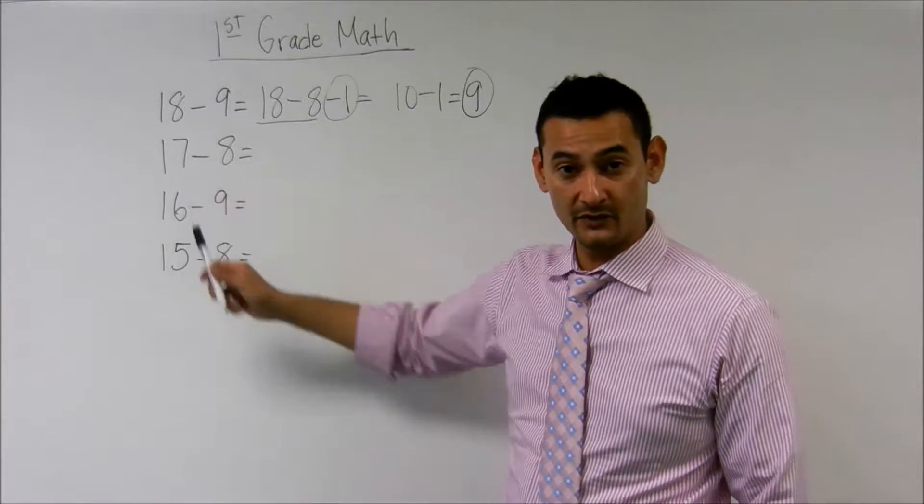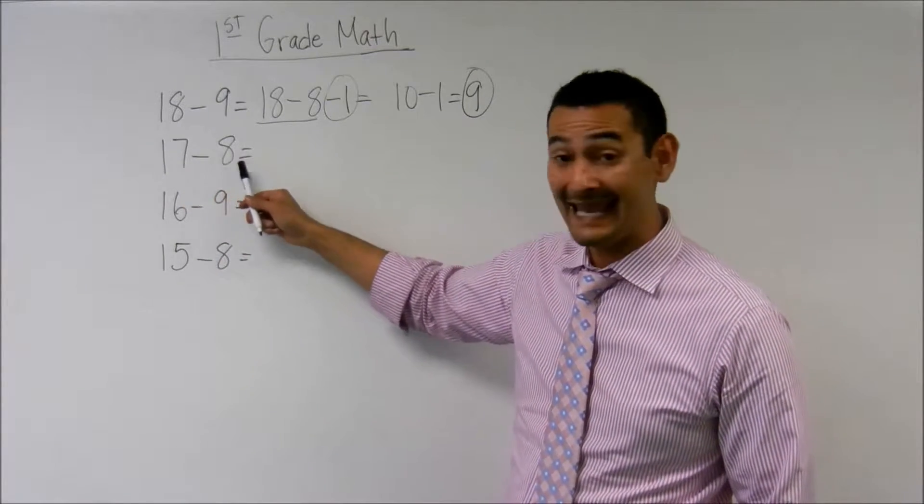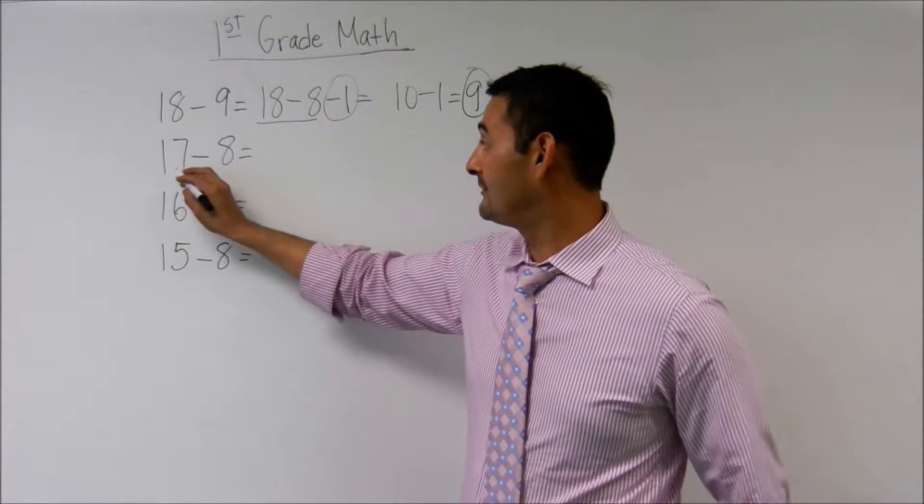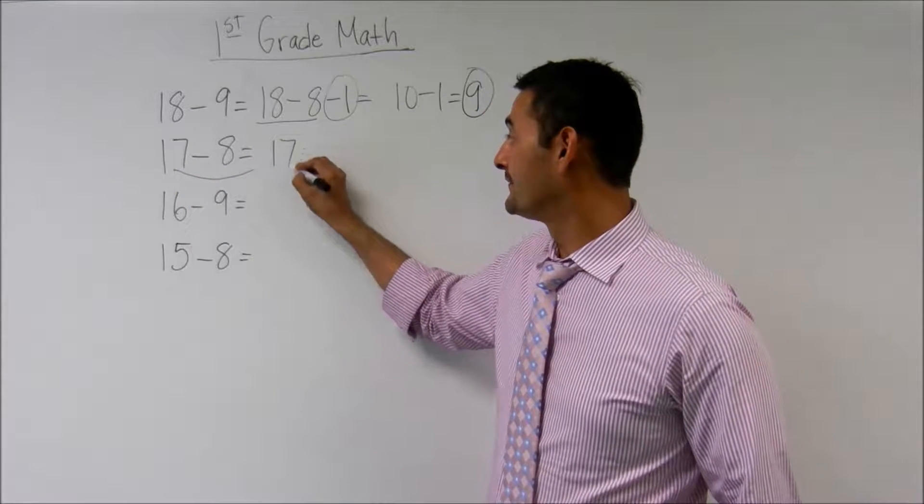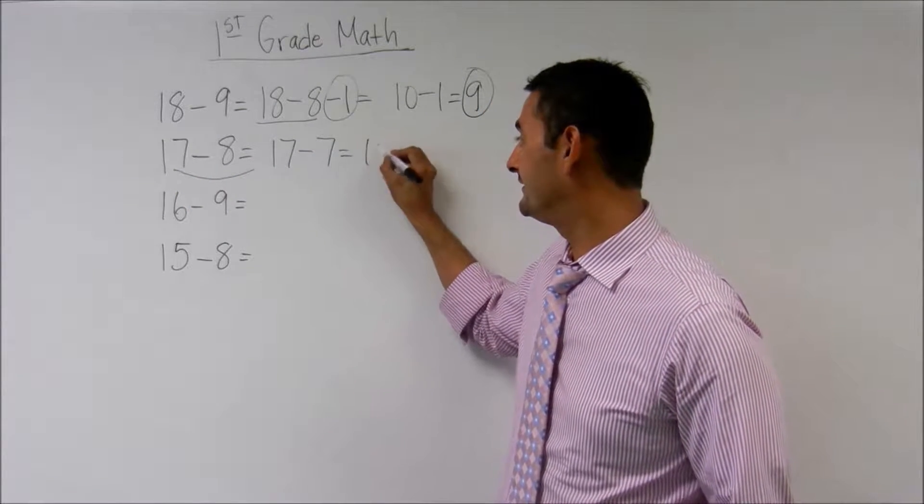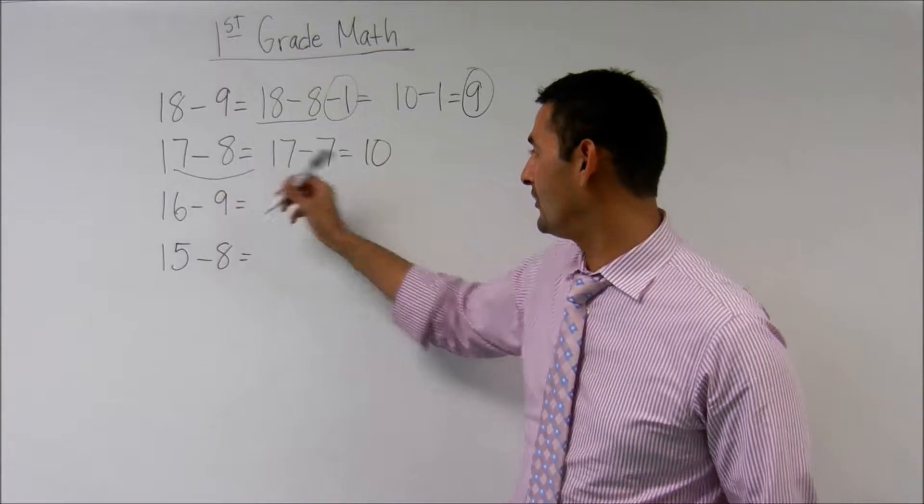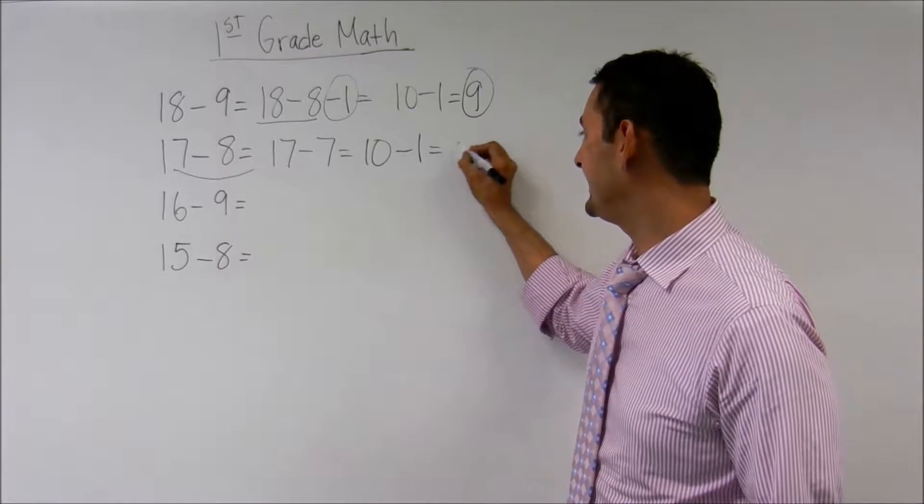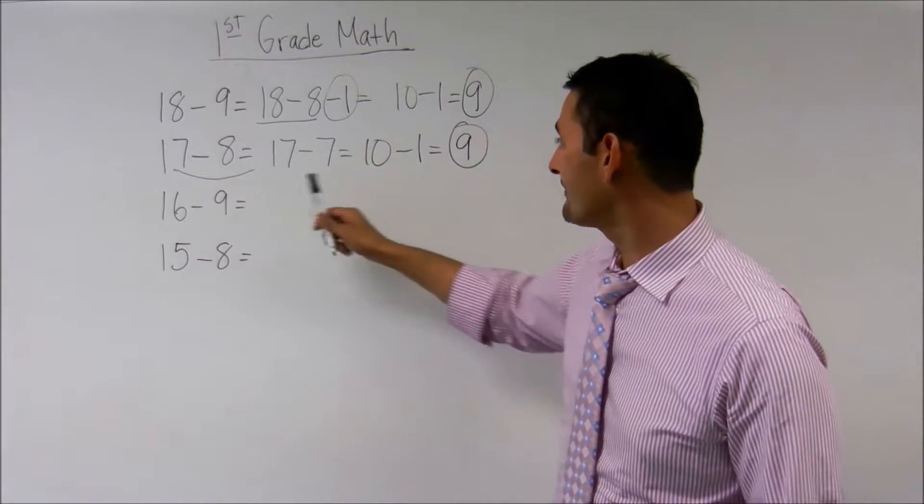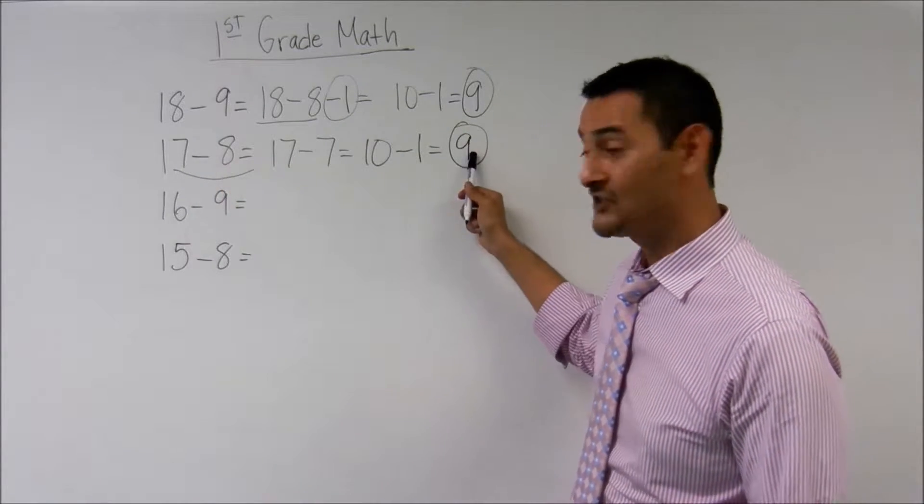Let's take a look at this next one. Here we have 17 minus 8. What I'm going to do is I'm going to move over to 17. I know that 17 minus 7 equals 10. And then I've got one more, 7, 8, one more, minus 1 equals 9. 17 minus 8 also equals 9.